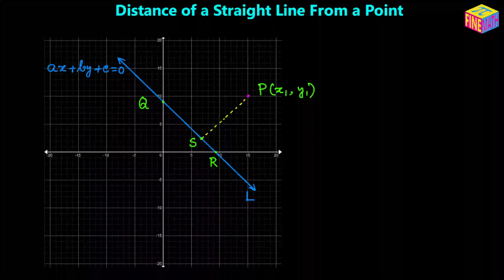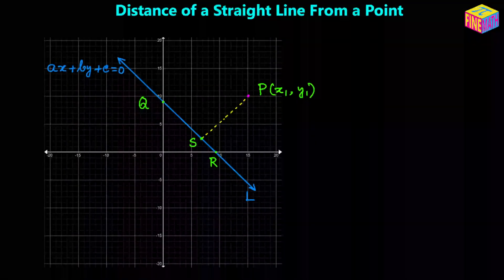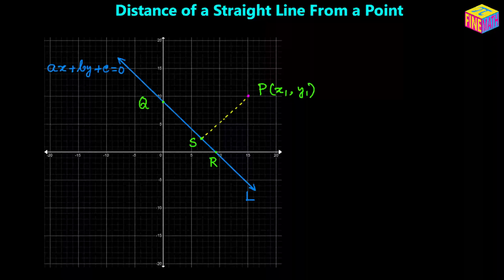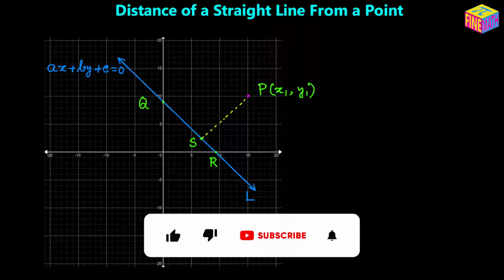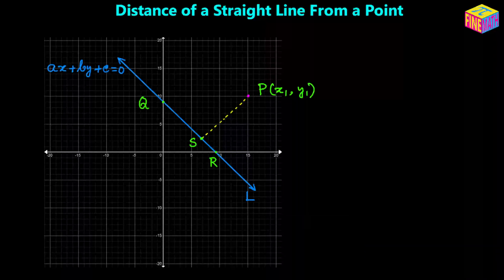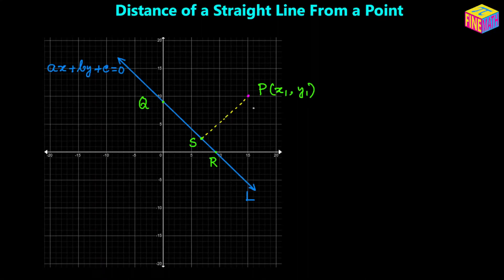Hi everyone. In this video we are going to discuss how to determine the distance of a straight line from a point. In this diagram I have a straight line L whose equation is Ax plus By plus C equals 0, and I have a point P whose coordinates are x₁ comma y₁. We have to find out the perpendicular distance from P to the straight line, which is PS, where S is the point where the perpendicular from P meets the line.